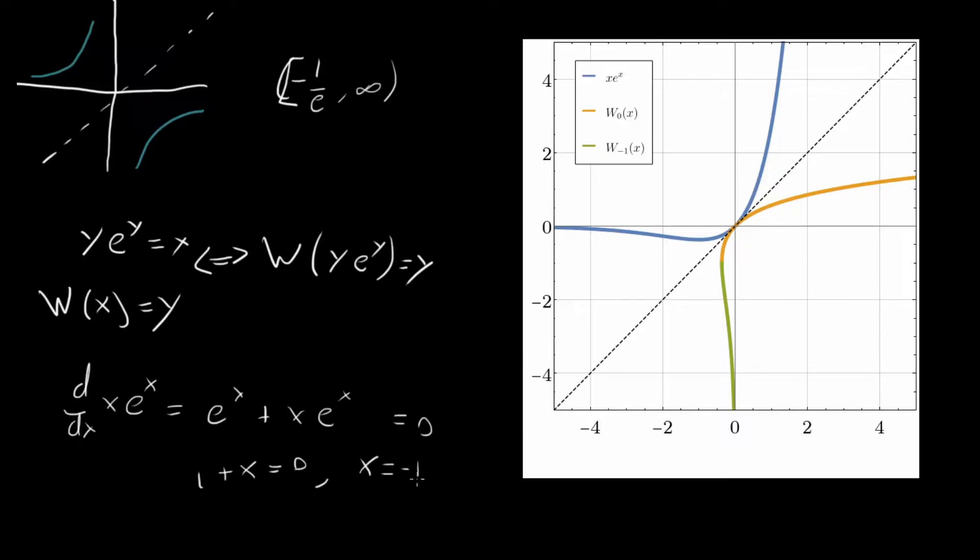So plug that back in to get this minimum value. What do we get? We get minus 1 e to the minus 1, also known as minus 1 over e. And so using this intuition, using this fact, which maybe you haven't thought about for a while, that the inverse of a function is just the function reflected across this line, y equals x. We were able to figure out what this leftmost point of the function is. And we were able to figure out that this Lambert W function is going to be multivalued.